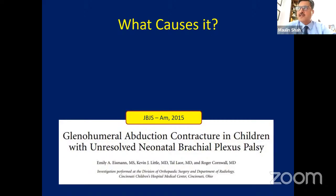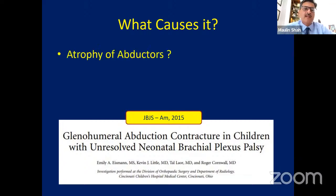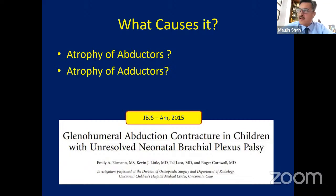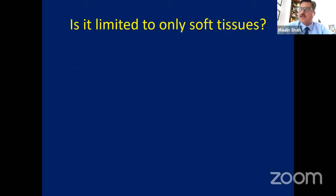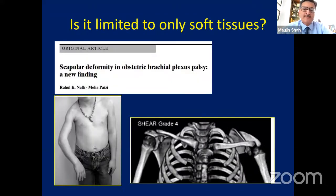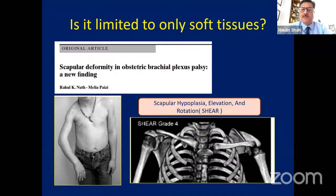What causes it? There is a lot of research worldwide. A paper from Cincinnati by Kevin and Roger found probable atrophy of abductors on MRI. I always ask whether there is also capsular contracture contributing. There is also a newer concept that it's not limited to soft tissue — there is also associated scapular deformity. Rahul Nath published on scapular deformity, terming it SHEAR deformity of scapula — scapular hypoplasia, elevation, and rotation — and suggested the triangular tilt operation with clavicular and acromion osteotomy, though it has many associated complications.